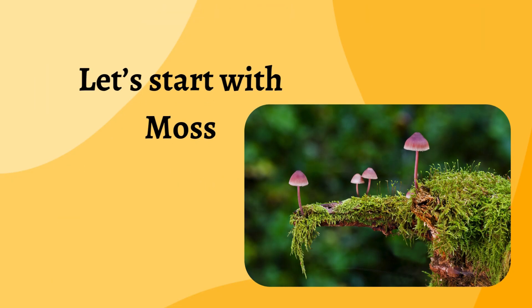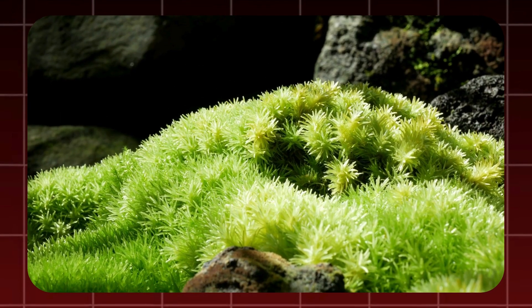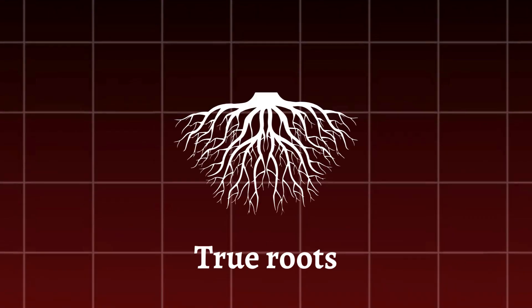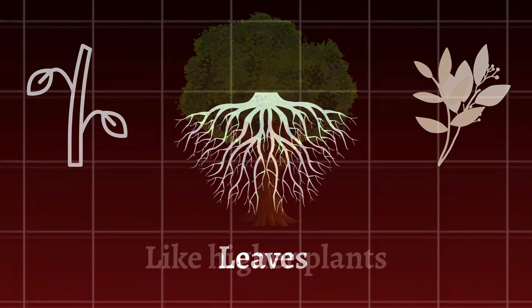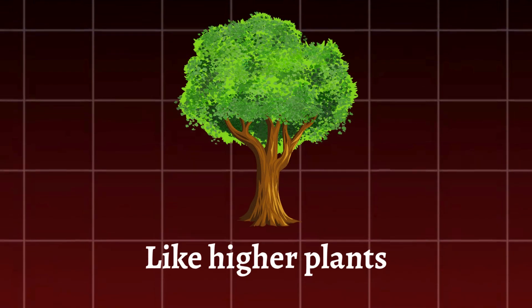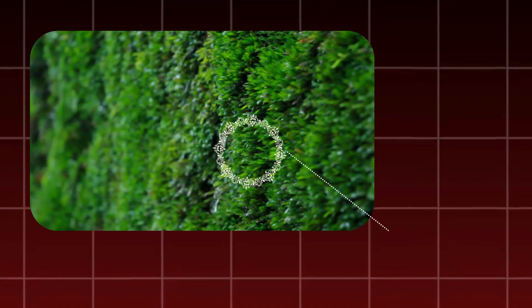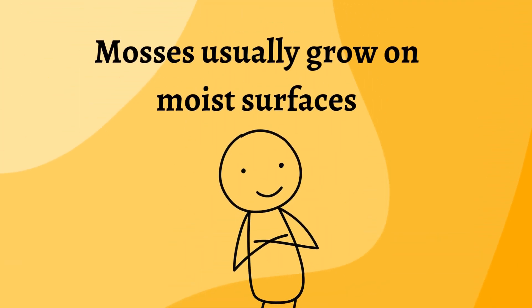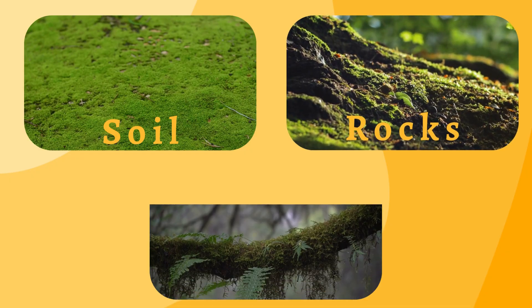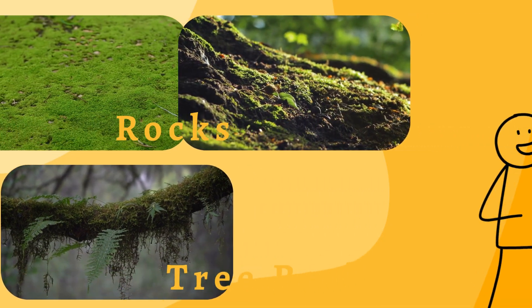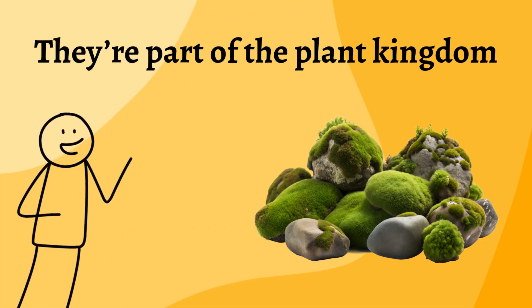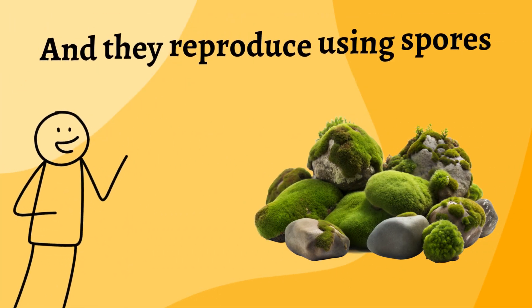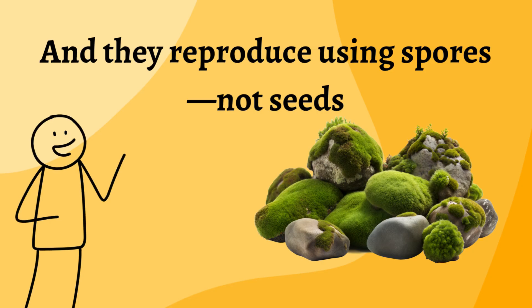Let's start with moss. Moss is a non-vascular plant, meaning it doesn't have true roots, stems, or leaves like higher plants, but it does have small leaf-like and stem-like structures. Mosses usually grow on moist surfaces like soil, rocks, or tree bark. They're part of the plant kingdom, and they reproduce using spores, not seeds.